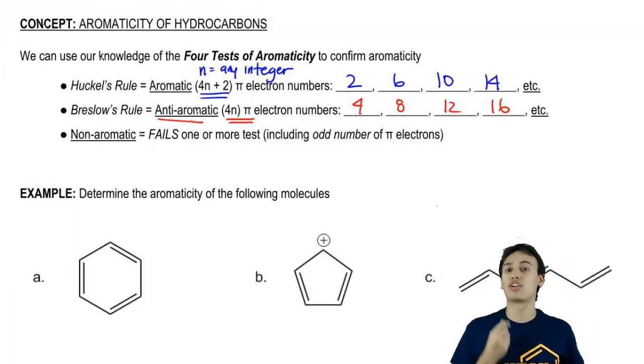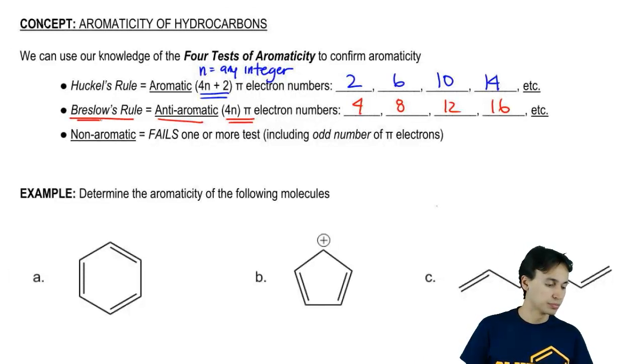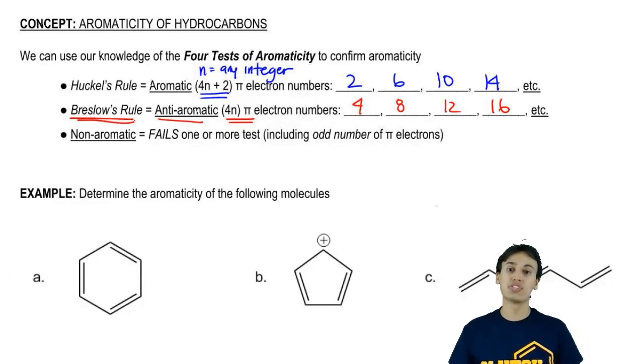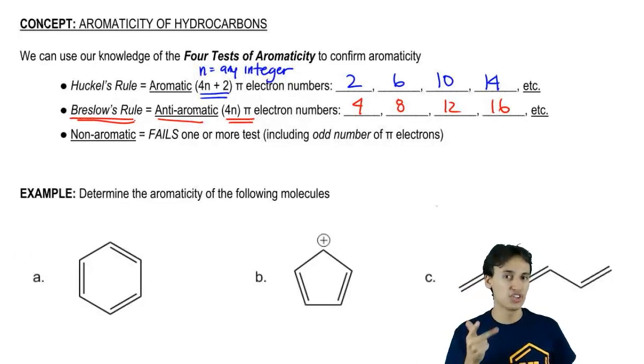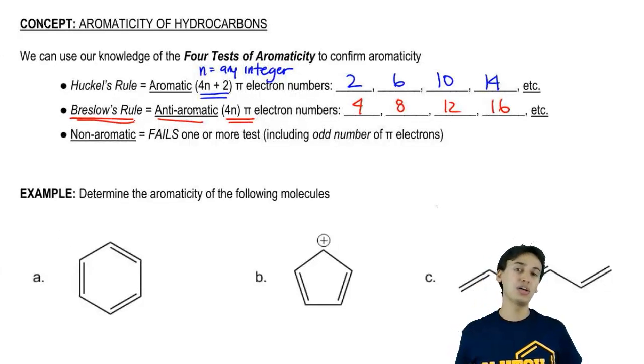Remember, these are molecules that are much less stable than normal. Remember that these are said to follow Breslow's Rule because Breslow's Rule said that you have the first three tests met. You're still cyclic. You're still fully conjugated. You're still planar but you have the wrong number of pi electrons. In fact, you have a 4n number of pi electrons.